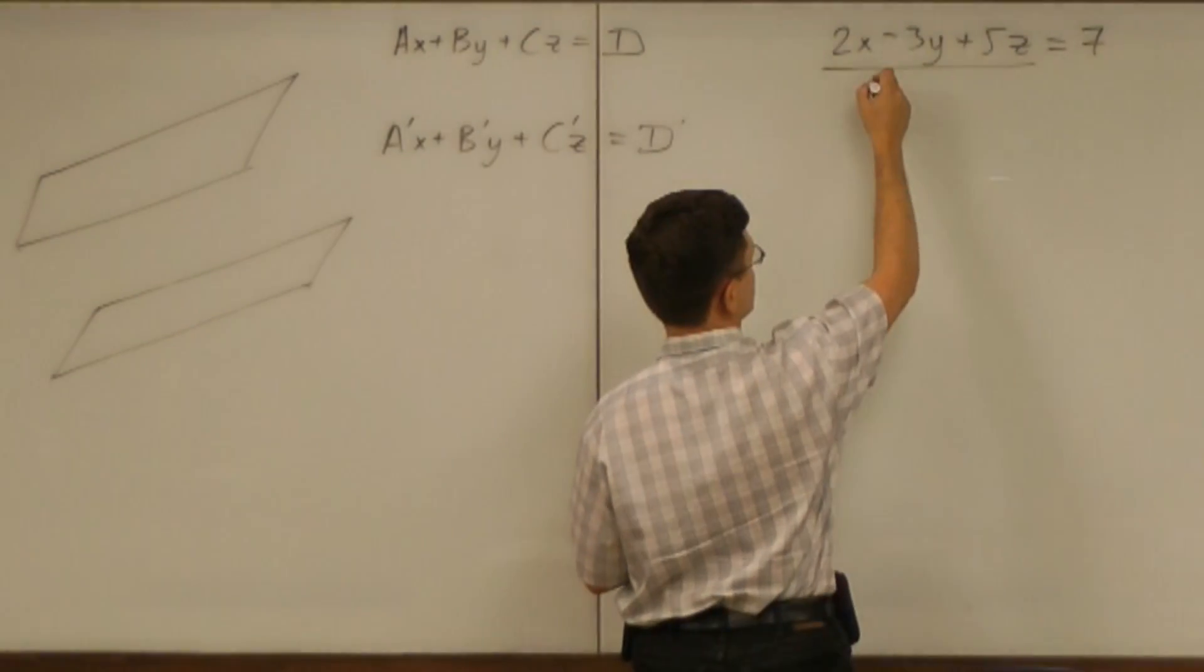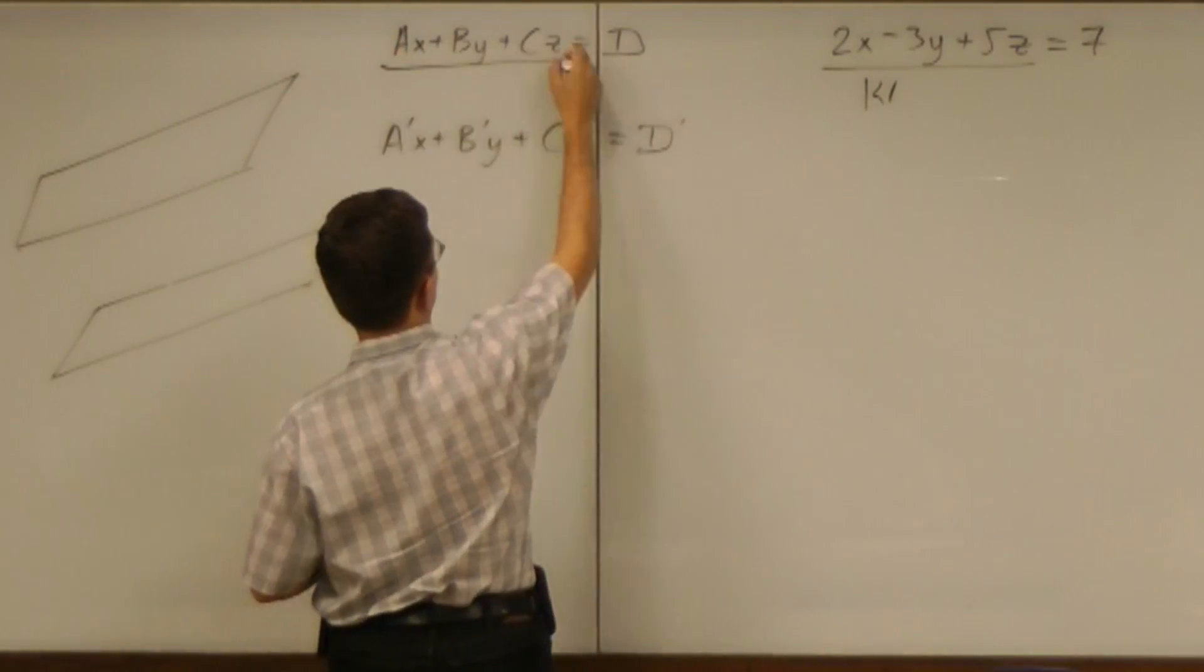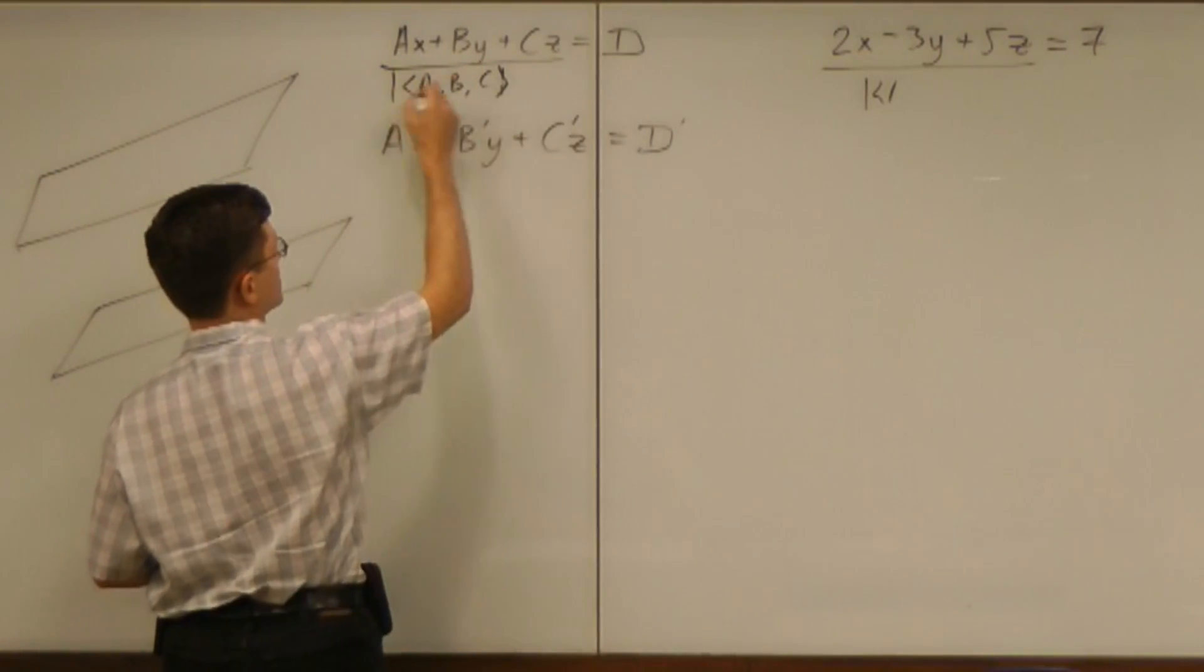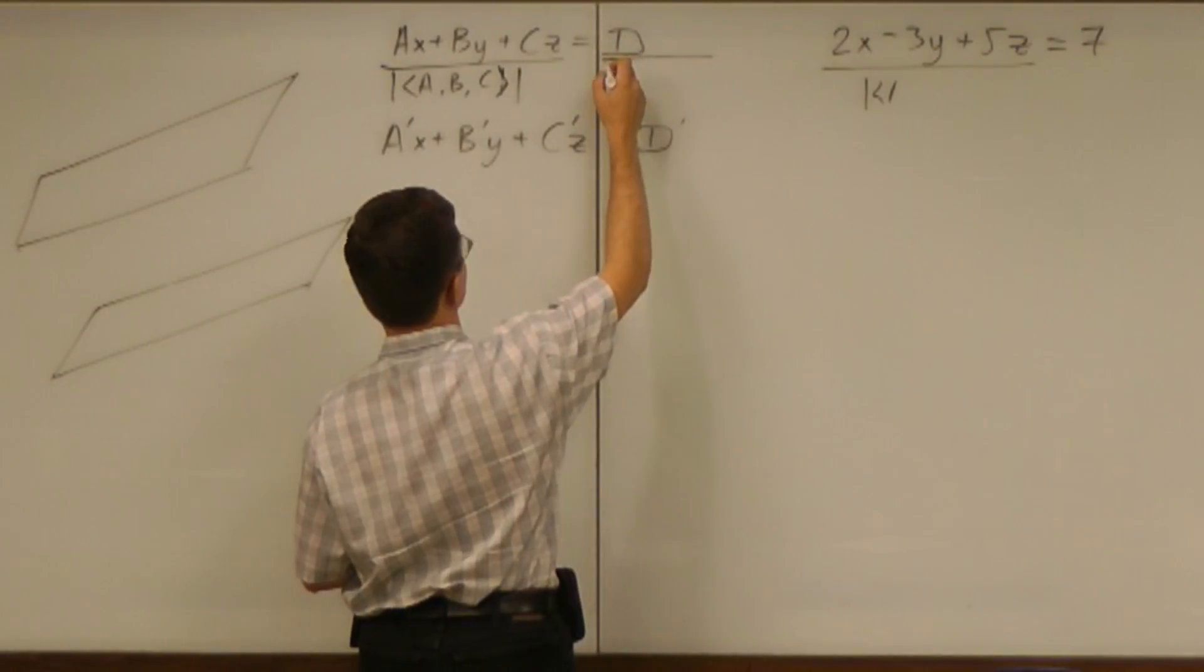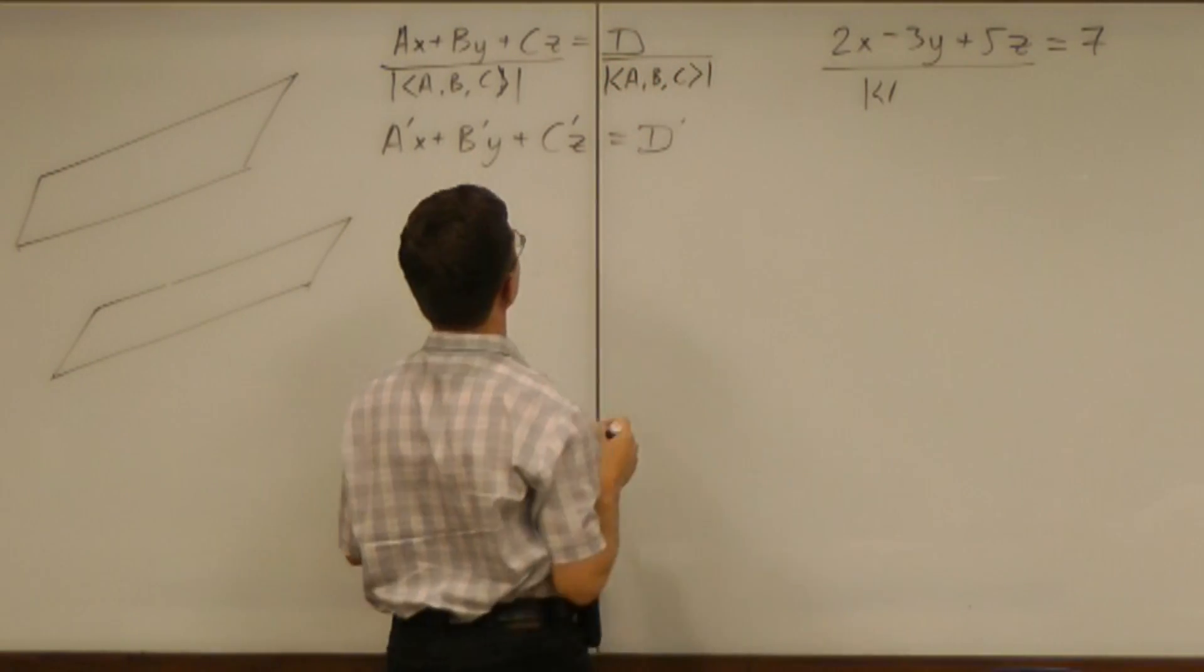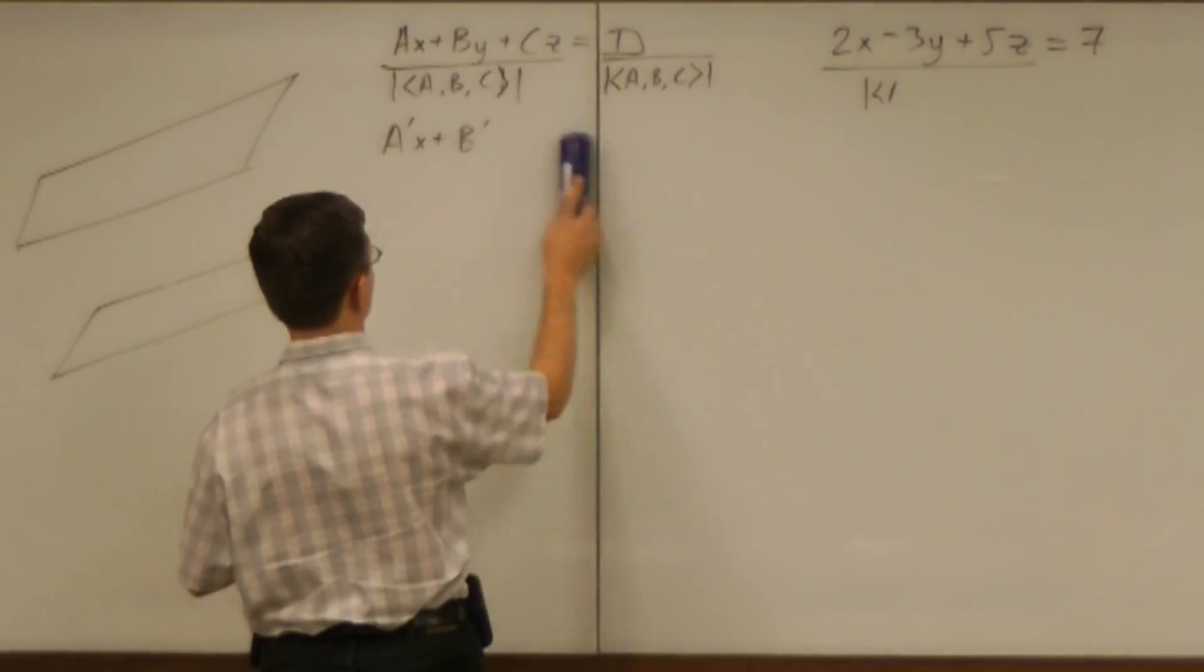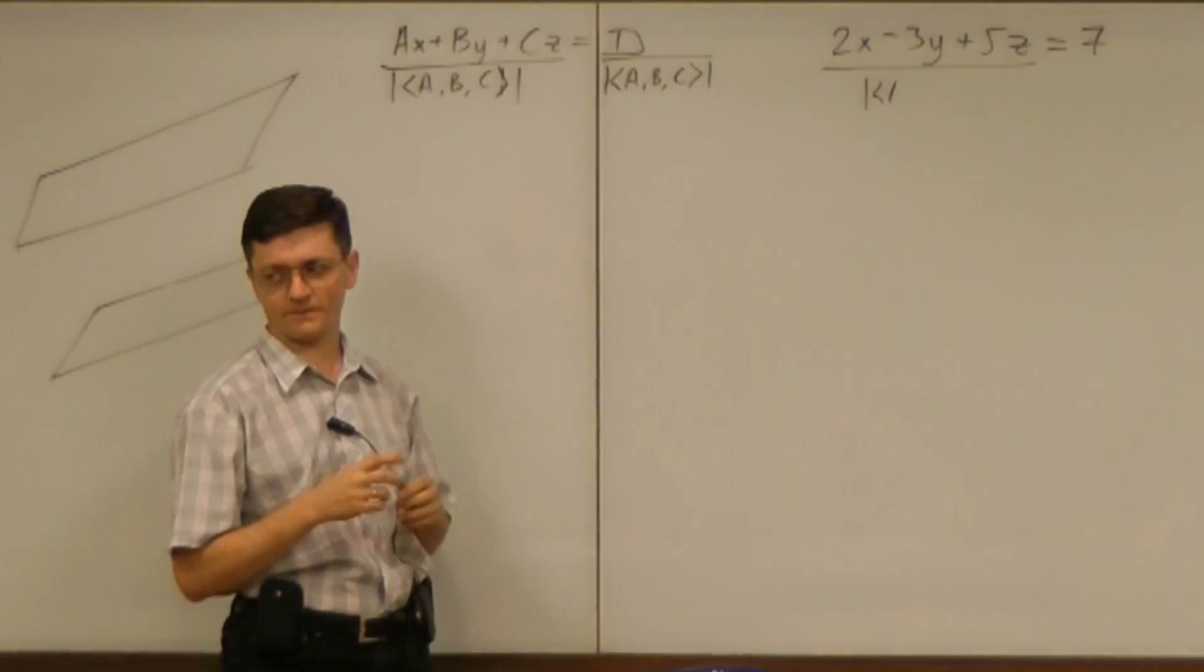If I divide that by, again, the same thing, the magnitude of that vector ABC. So I take that vector, compute its magnitude. I can do the same to the right-hand side. Why would I do it? Why would such a crazy idea come to my mind to divide both sides by the magnitude of that vector?